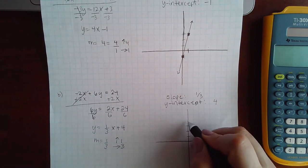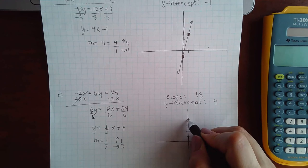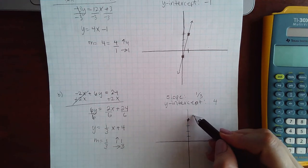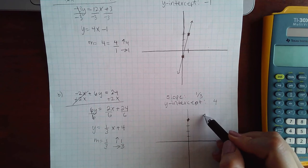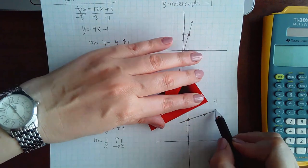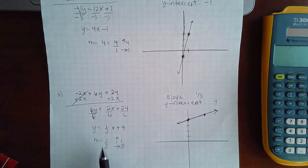So y-intercept is positive 4, so mark your point there. From there, go up one and over one, two, three to make the second point, and now you have your line.